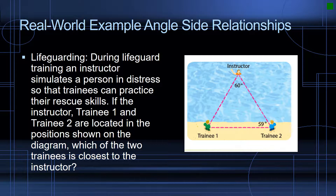This is about lifeguarding. During lifeguard training, an instructor simulates a person in distress so the trainees can practice their rescue skills. If the instructor, trainee one down here, and trainee two are located in the positions shown on the diagram, which one of the two trainees is closest to the instructor?